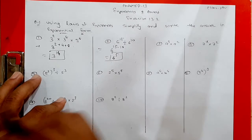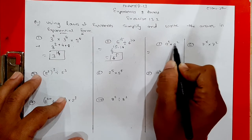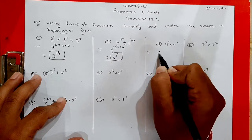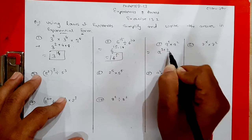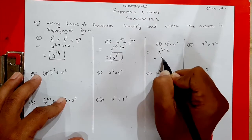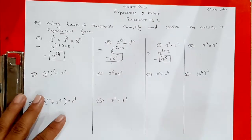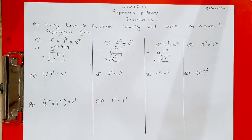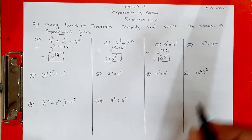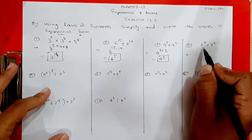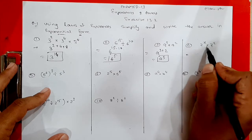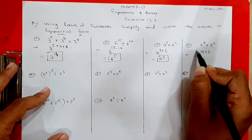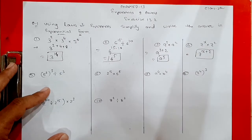Third question: a raised to 3 multiplied by a raised to 2. Same base, multiplication sign — add the powers: a raised to 3 plus 2 equals a raised to 5. Fourth question: 7 raised to x multiplied by 7 raised to 2. Both bases are the same, multiplication sign — add powers: answer is 7 raised to x plus 2.